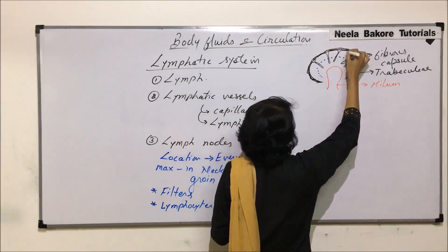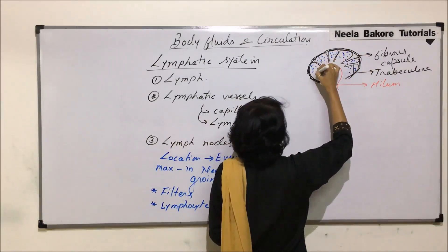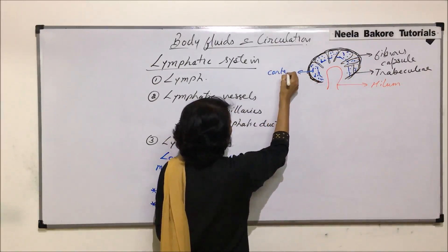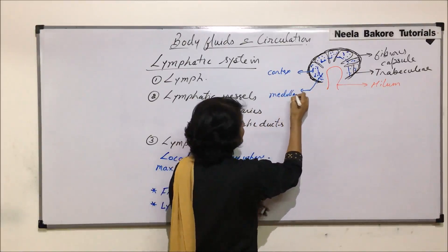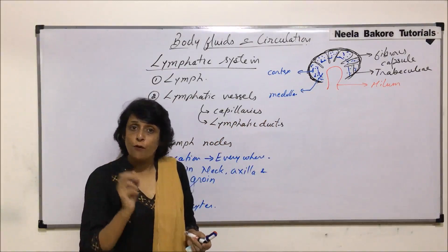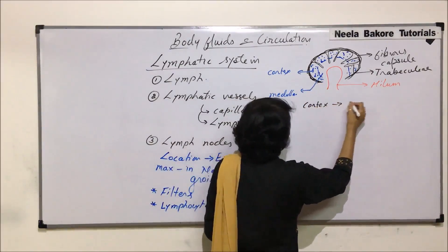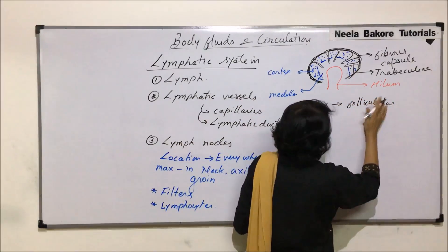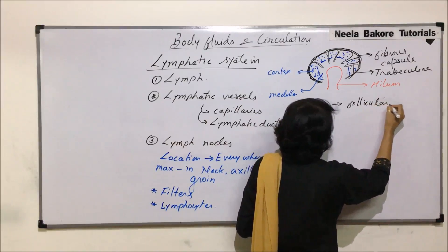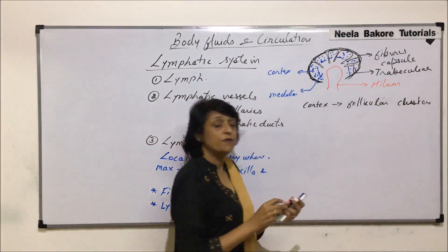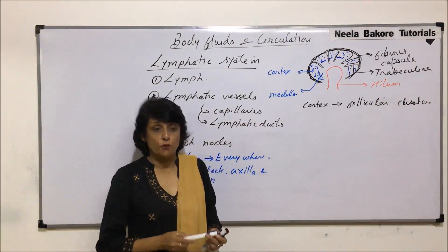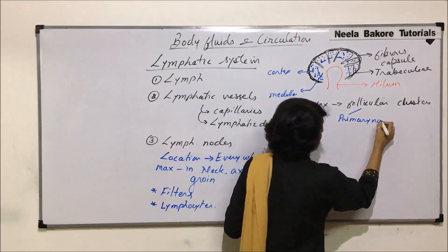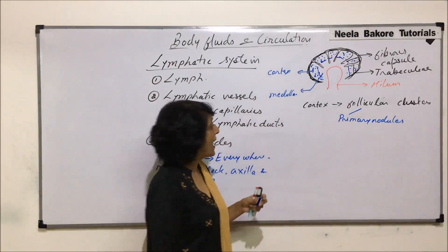The outer part is known as the cortex and the inner one is known as the medulla. In the cortex are present clusters of follicles — follicular clusters. These follicular clusters are basically lymphocytes. These follicles are initially primary nodules, which contain lymphocytes.